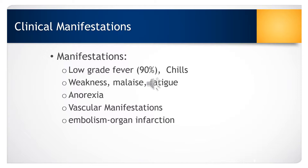The majority of patients with infective endocarditis will have a low-grade fever, chills, weakness, malaise, fatigue, and anorexia. They may also have vascular manifestations. There is also the possibility of embolization to an organ, which can cause organ infarction. Typical organs affected include the spleen and the kidney, and there may also be emboli in the arms or the legs.